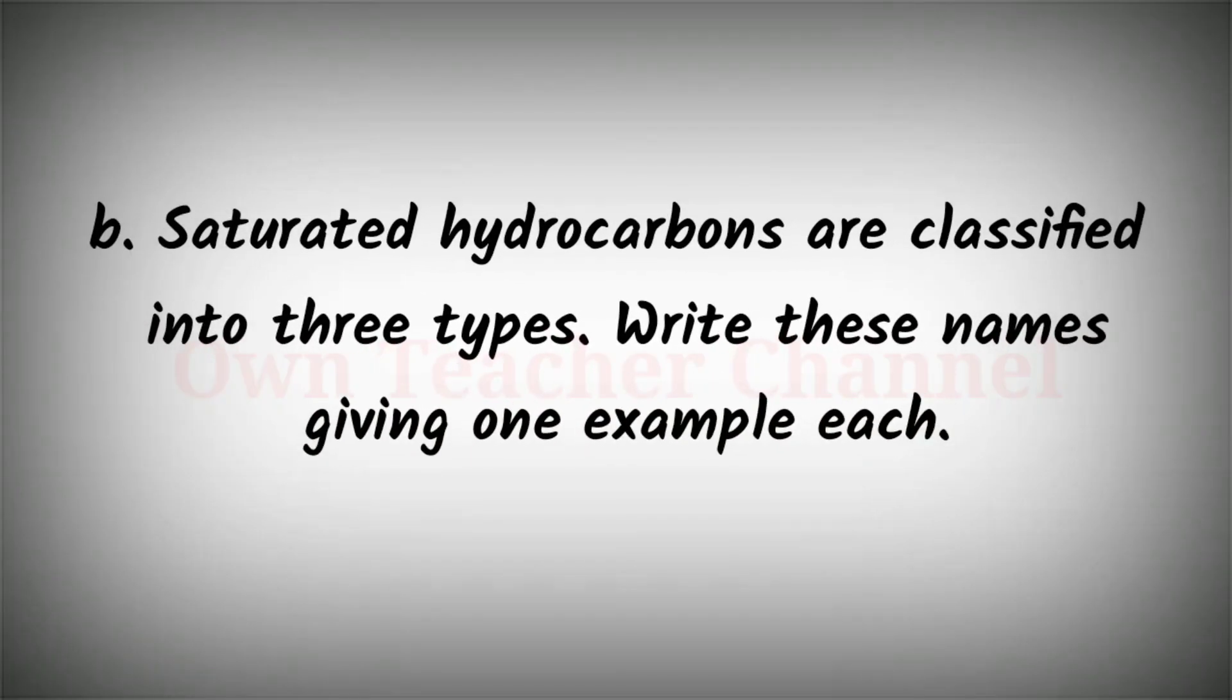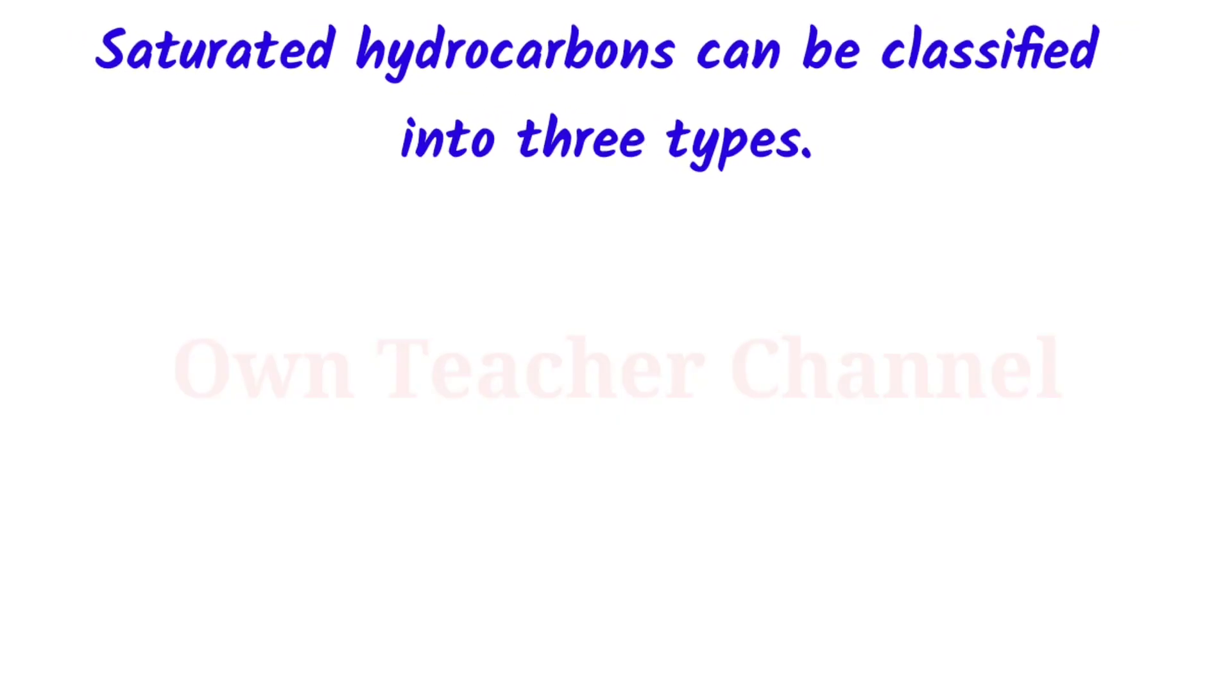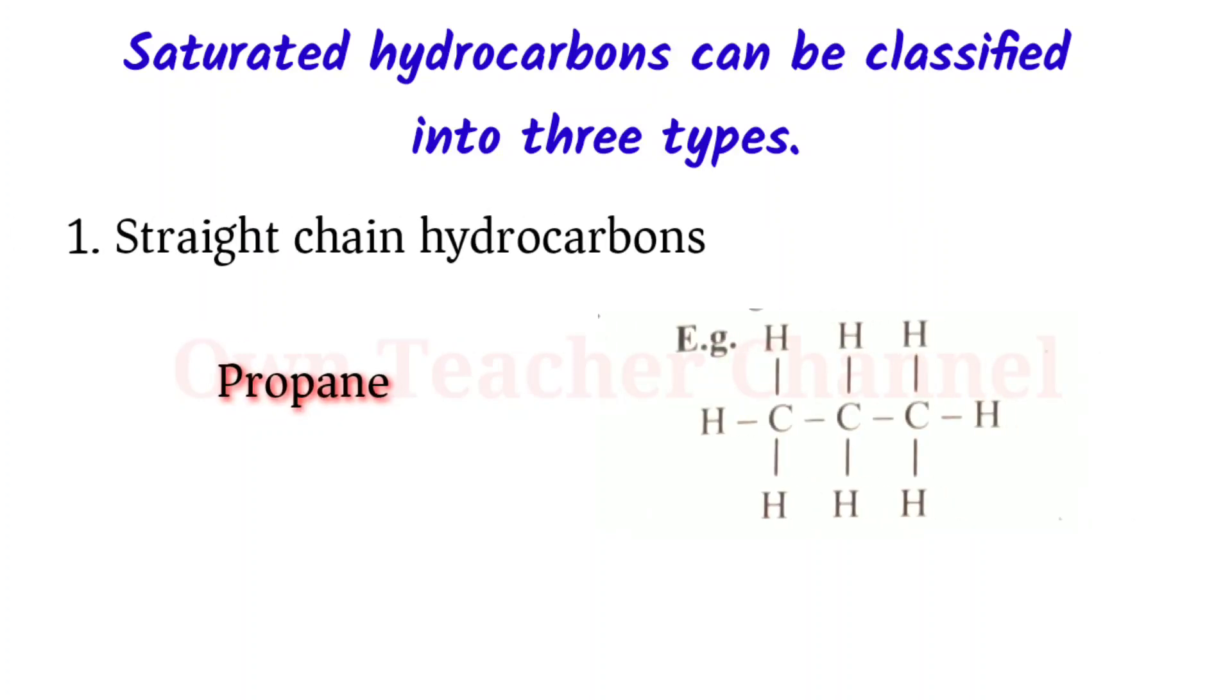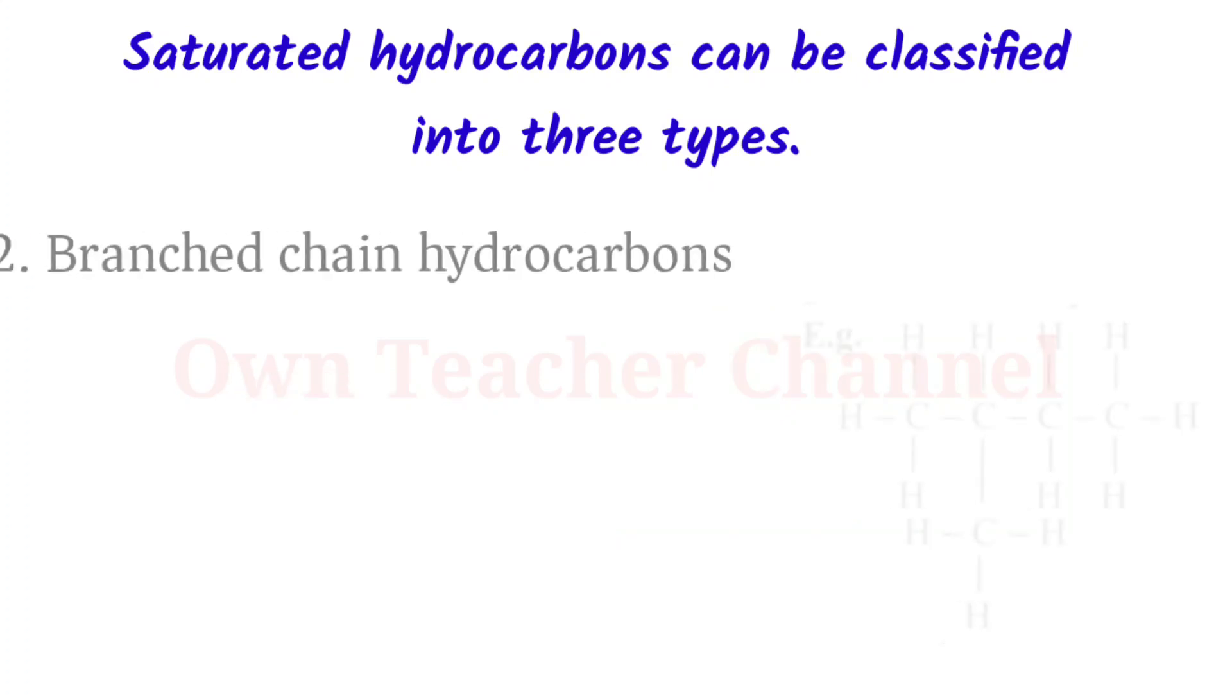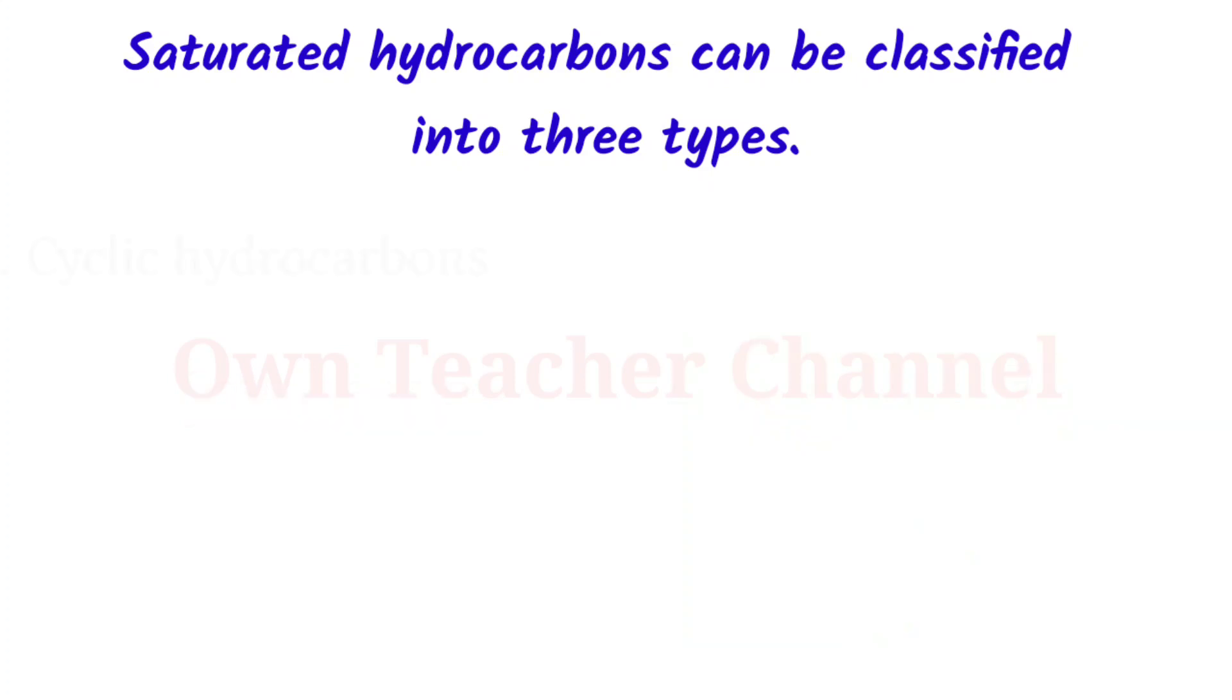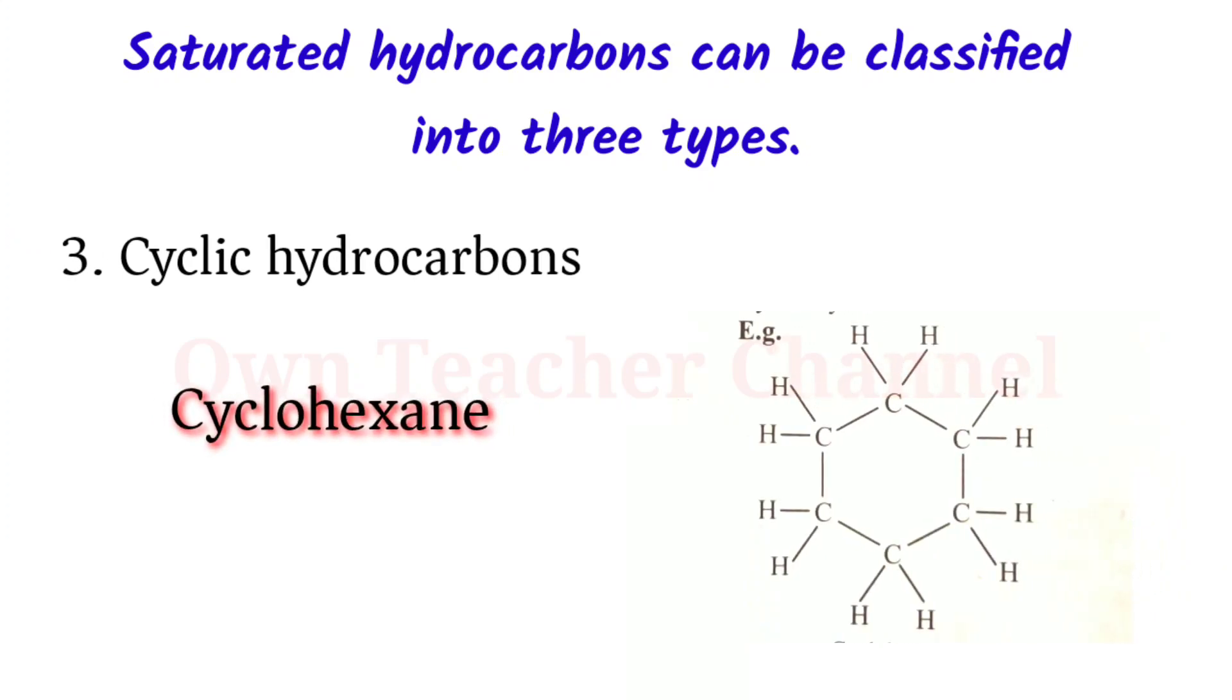B: Saturated hydrocarbons are classified into three types. Write these names giving one example each. Saturated hydrocarbons can be classified into three types: 1. Straight chain hydrocarbons, for example propane. 2. Branched chain hydrocarbons, isopentane. 3. Cyclic hydrocarbons, cyclohexane.